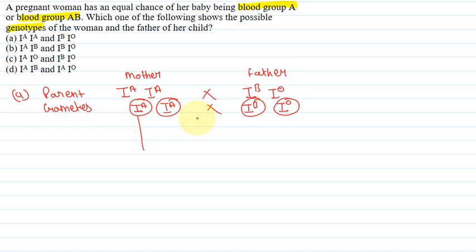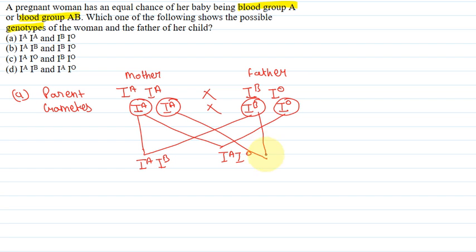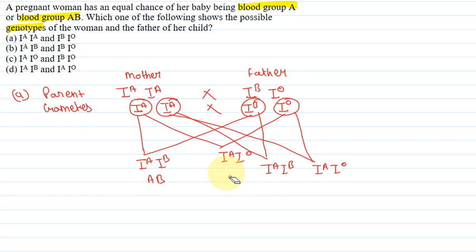So now what will be the progeny? That will be IA and IB, giving blood group AB. Then IA and IO, giving blood group A. Then again IA and IB giving blood group AB, and IA and IA giving blood group A. So the progeny blood groups are: AB, A, AB, and A.